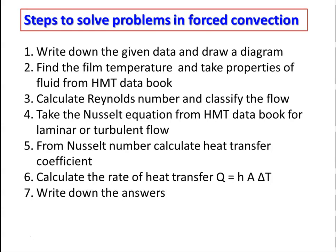From the Nusselt number, calculate the heat transfer coefficient. Nu = h·L/k or h·D/k depending on geometry. Once you have h, calculate the rate of heat transfer: Q = h·A·ΔT, where h is the average heat transfer coefficient, A is the surface area for convection, and ΔT is the temperature difference between the fluid and the surface. Finally, write down the answer summarizing the unknown parameters.